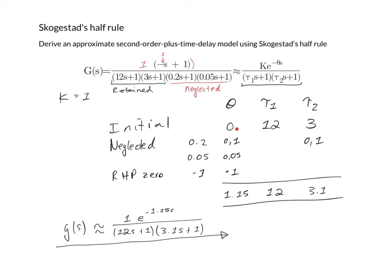If there were any dead time over here it goes there. We then add half of the first neglected time constant to the dead time and half to the smaller time constant of our approximation.